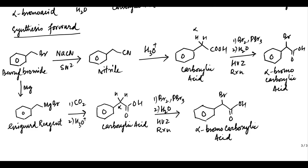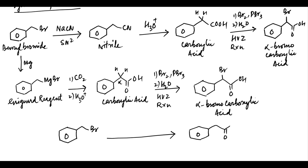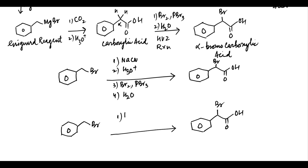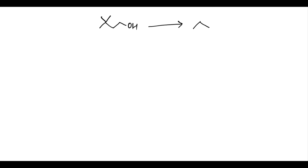Thus the conversion of benzyl bromide into alpha-bromo benzylic acid can be carried out by sequential treatment with sodium cyanide, followed by hydrolysis, then bromination in the presence of phosphorus tribromide, followed by hydrolysis. Similarly, the second alternate synthesis scheme can be carried out by sequential treatment with magnesium to form the Grignard reagent, then carbon dioxide followed by aqueous acid workup, then Br2 in the presence of PBr3, and finally hydrolysis.